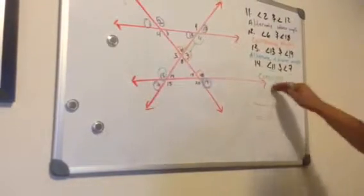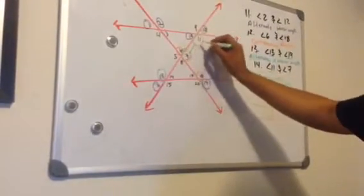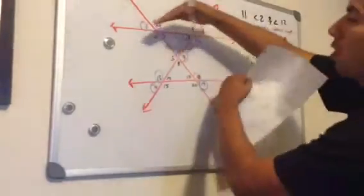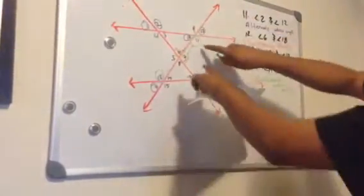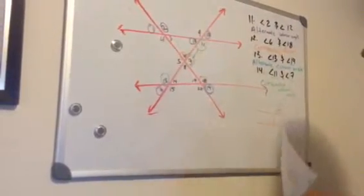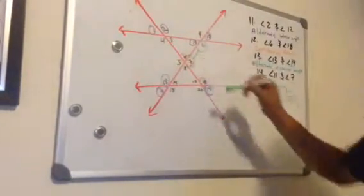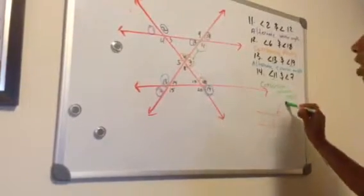And the reason why it's consecutive interior angles, because these two angles are inside these two parallel lines. If this was on the outside, it'll be called consecutive exterior angles, but because it's on the inside, it's called consecutive interior angles.